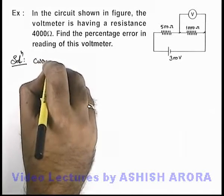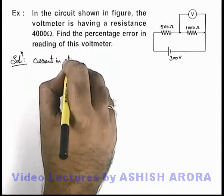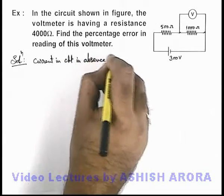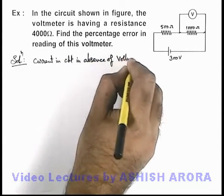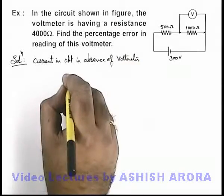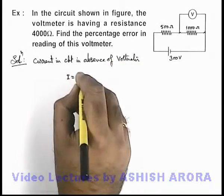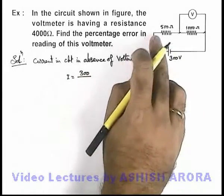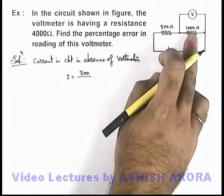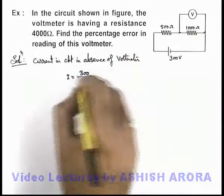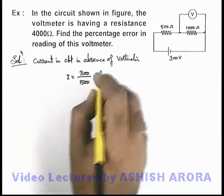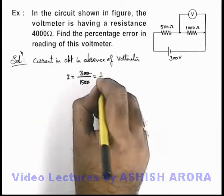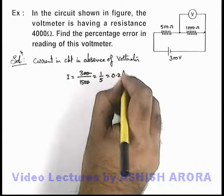In the absence of the voltmeter, the current in the circuit is given as: I = EMF / total resistance. The EMF is 300 volts, and only the 500 ohm and 1000 ohm resistances are connected in series, so the total resistance is 1500 ohms. Therefore, I = 300/1500 = 1/5 = 0.2 amperes.